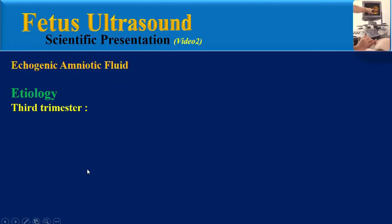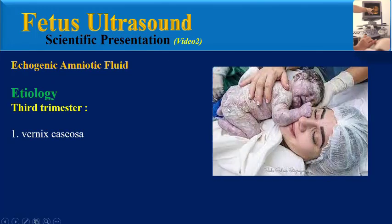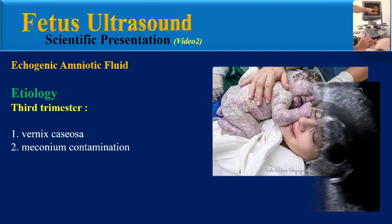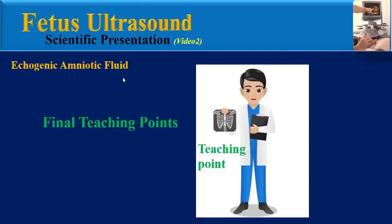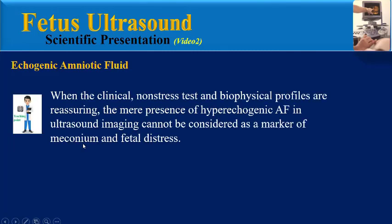In the third trimester, the most common causes are again vernix caseosa and meconium contamination. Please pay attention to these final teaching points: when clinical non-stress tests and biophysical profiles are reassuring, the mere presence of hyper-echogenic amniotic fluid on ultrasound imaging cannot be considered a marker of meconium or fetal distress.